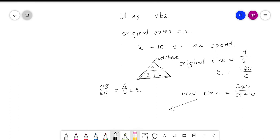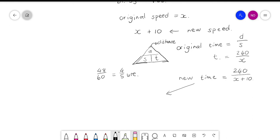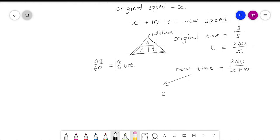And his new time will be shorter. Good, so now we can go say we know that his original time, 240 over x, minus 4/5 will give you his new time.